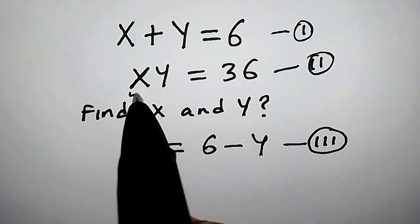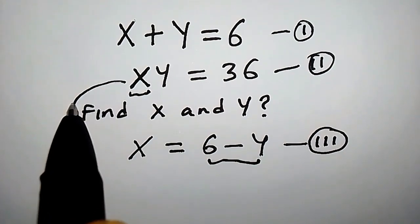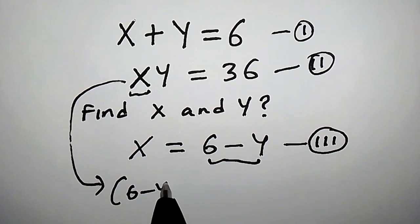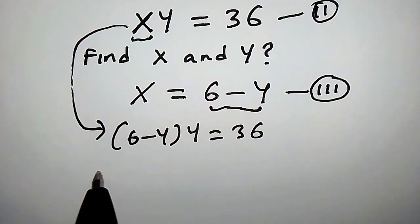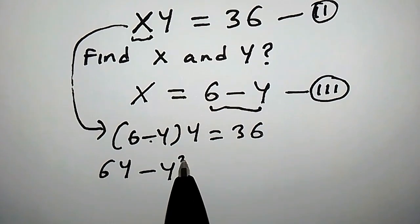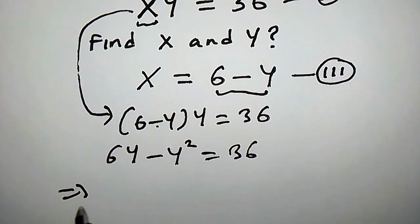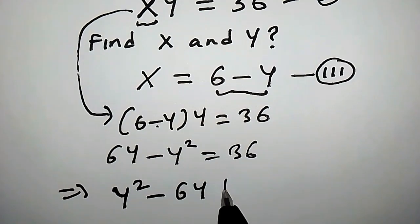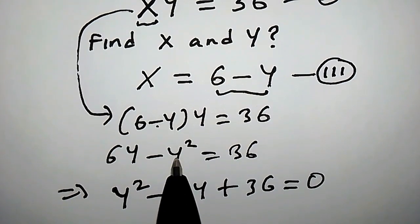The next step is to replace x with 6 minus y. This equation now becomes 6 minus y times y equal to 36. That gives us 6y minus y squared equal to 36. This implies that y squared minus 6y plus 36 is equal to 0, by transferring each term to the right hand side.